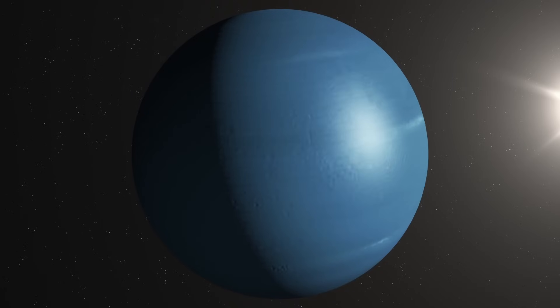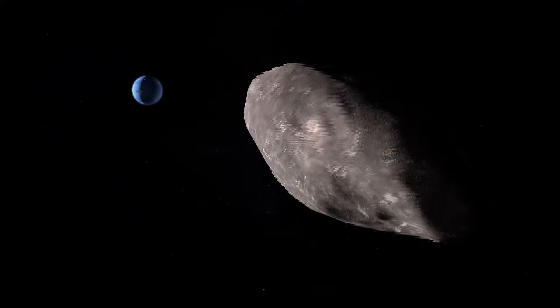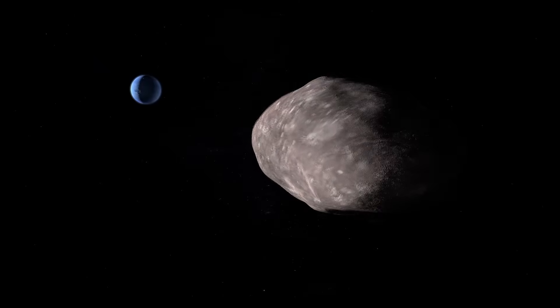But unlike Jupiter's Great Red Spot, which has persisted for centuries, Neptune's storms are ghosts. They form, rage, and vanish within a few years, hinting at a completely different atmospheric engine. For decades, the reason was a mystery.